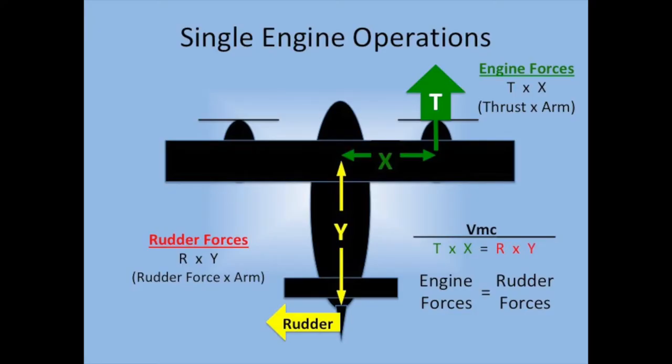As airspeed increases, the rudder is going to be more effective. So as the aircraft decelerates, as it starts to slow down, it gets to a point where the rudder no longer can offset that asymmetrical thrust, and that is minimum control speed. That's the point at which you lose directional control of the aircraft because the rudder no longer has enough air flowing over it to counteract the thrust from that operative engine.